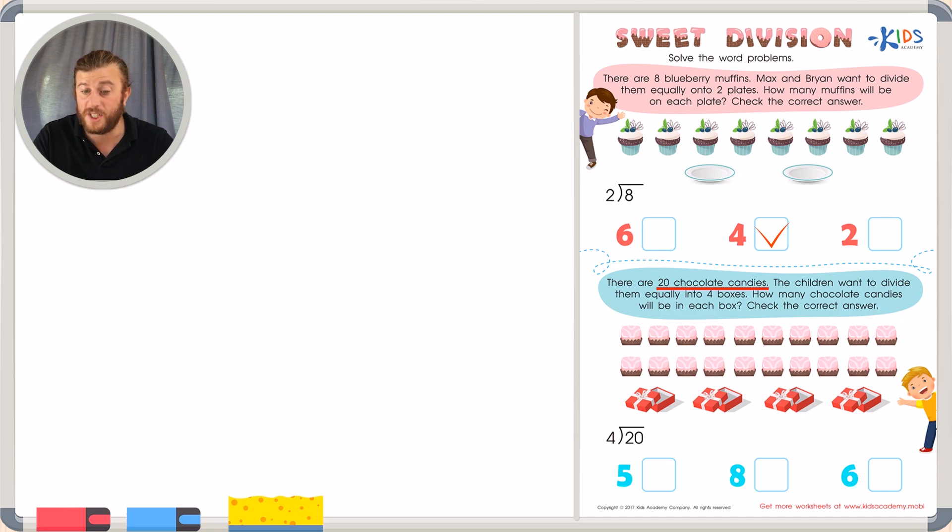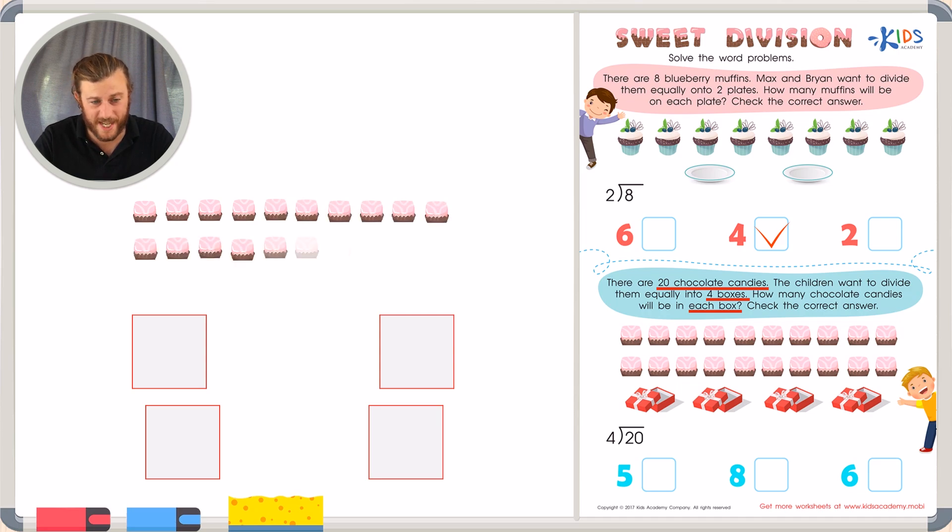The children want to divide them equally into four boxes. So I'm already starting to think, twenty candies, four boxes. Okay. How many chocolate candies will be in each box? Check the correct answer. Okay. So going back into the problem, I can see there are four boxes. So I'm going to go with drawing again. I'm going to draw my four boxes. Now it says there are twenty chocolate candies in total. So I'm going to put one chocolate candy in each box, counting until I get to twenty. Then we can see how many candies there are in each box. Let's draw and count together.